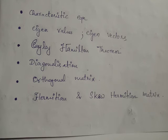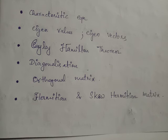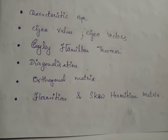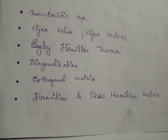We studied important classes of square matrices: orthogonal matrices, which accommodate real entries, and Hermitian and skew-Hermitian matrices, which accommodate complex entries as well. The mathematician Charles Hermite contributed to the concept of Hermitian and skew-Hermitian matrices, and that is why these matrices are named after him.